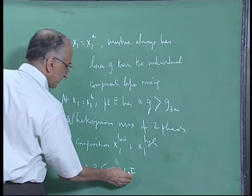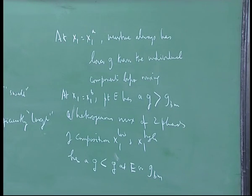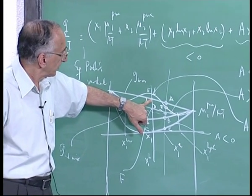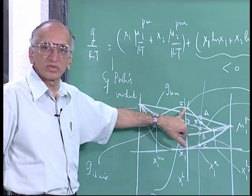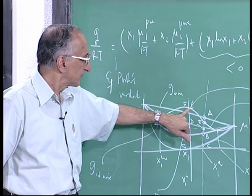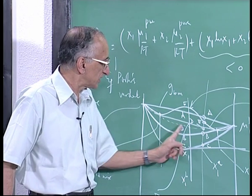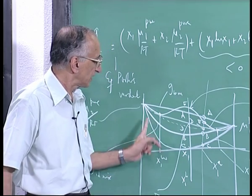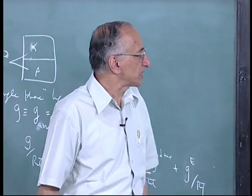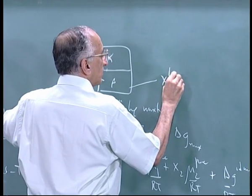At X1 equals X1_B, the heterogeneous mixture of two phases with compositions X1_low and X1_high has a G lower than both the single-phase G at that composition and G before mixing. G before mixing would be at point A; had it remained a homogeneous phase the energy would be at E, which is higher than separate components. The lowest state is the two-phase point F. Therefore thermodynamics tells you the system settles into two phases.